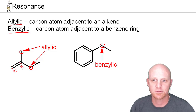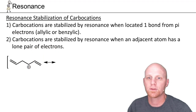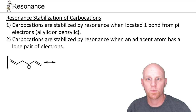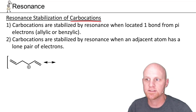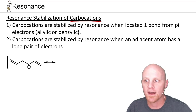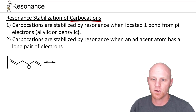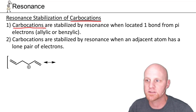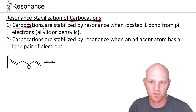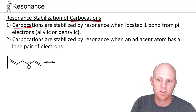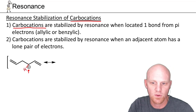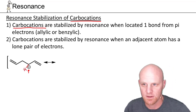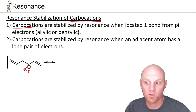Let's go draw some resonance structures. There are really three major types of molecules or ions we'll draw resonance structures for. The first are carbocations — a carbon with a positive charge. Carbocations are stabilized in one of two situations. The first: carbocations are stabilized by resonance when located one bond from pi electrons — allylic or benzylic. If a carbocation is one bond away from pi electrons, we should expect resonance.